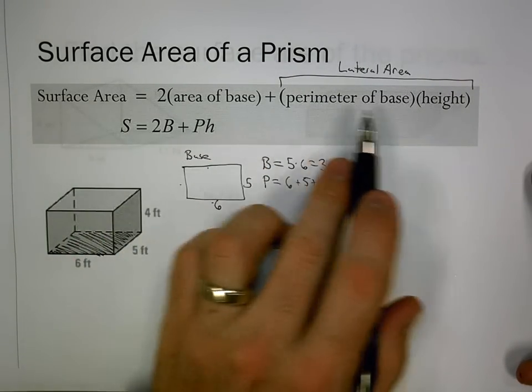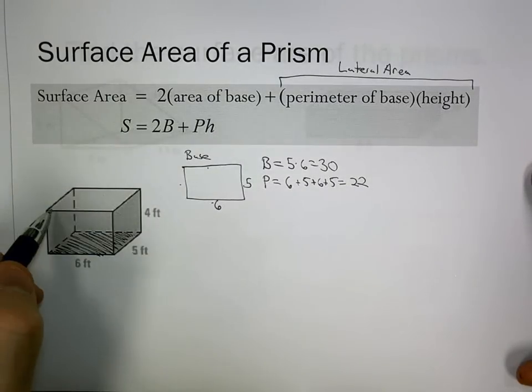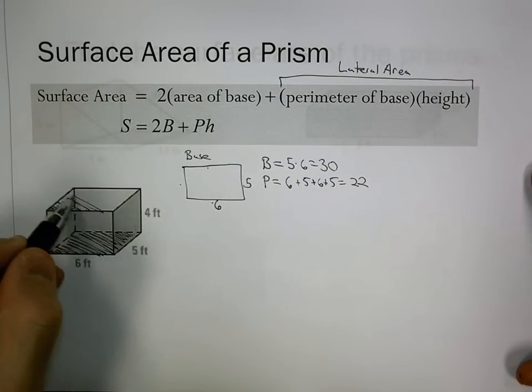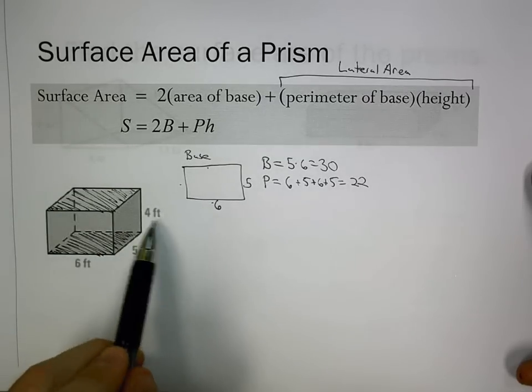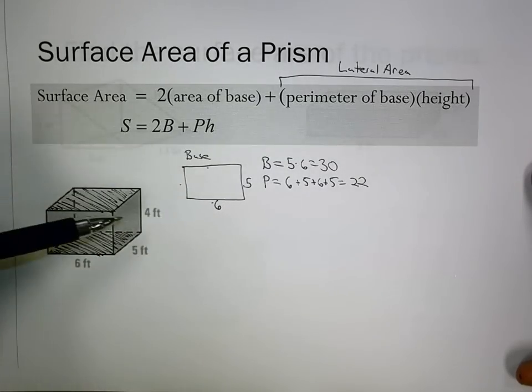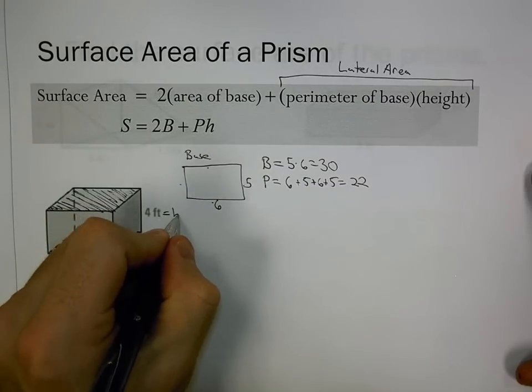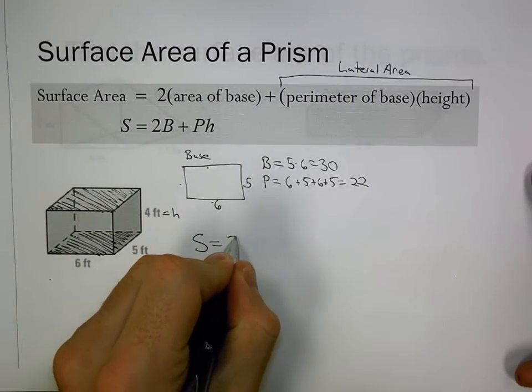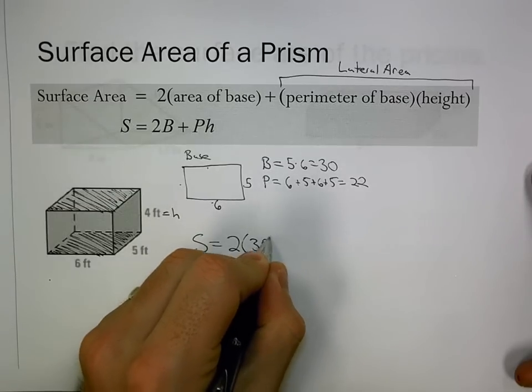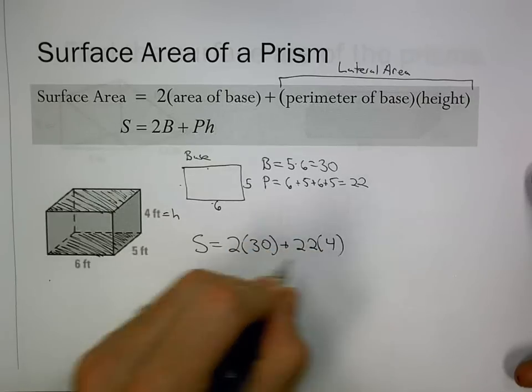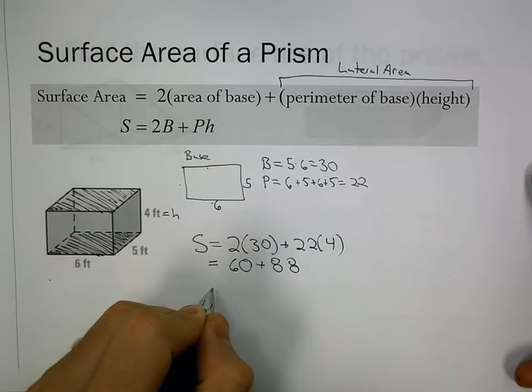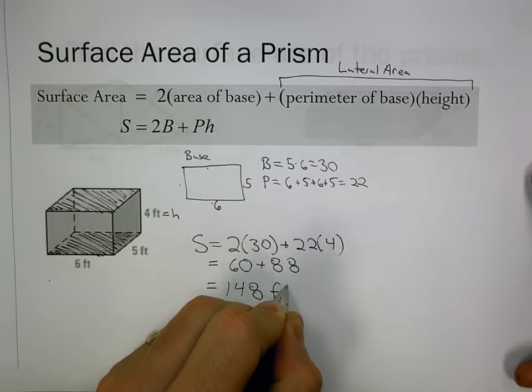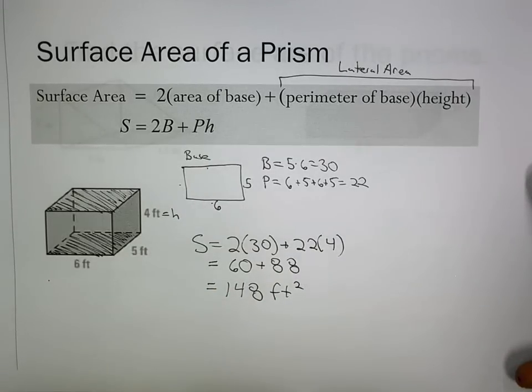The height is the distance between the bases, how tall the prism is. In this case, it's 4. So surface area is 2 times 30 plus 22 times 4, giving us 60 plus 88, or 148 feet squared.